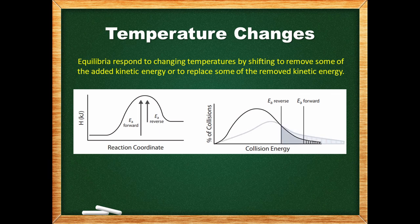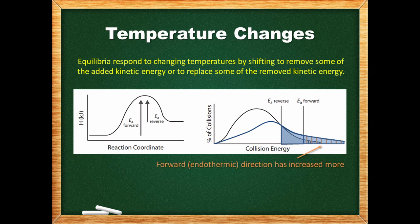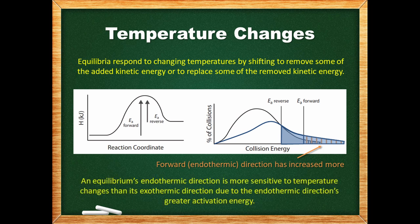When we increase the temperature, the collision energy distribution curve flattens out as more collisions have higher energy. The percentage of collisions possessing the activation energy for the exothermic or reverse reaction approximately doubles, while the percentage for the endothermic or forward reaction increases by around four or five times. As we can see, an equilibrium's endothermic direction is more sensitive to temperature changes than its exothermic direction due to the endothermic direction's greater activation energy. In other words, changing the temperature will have a greater effect on the rate of the endothermic reaction.